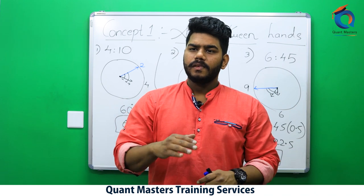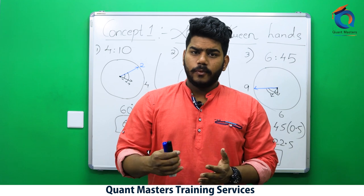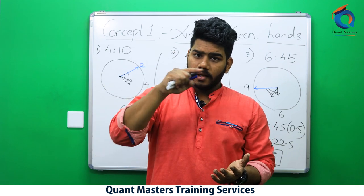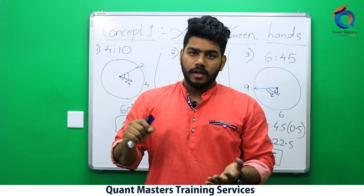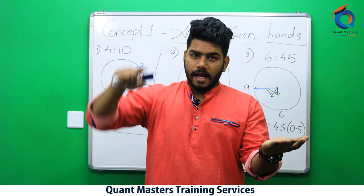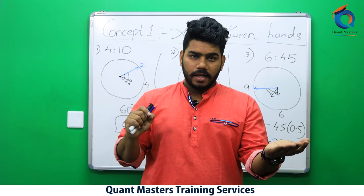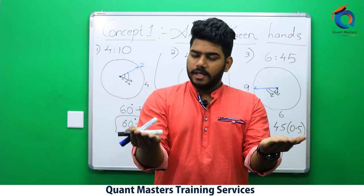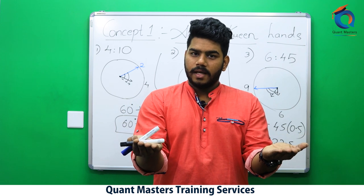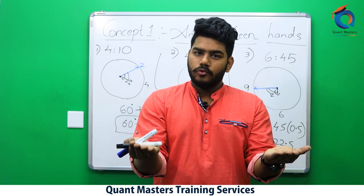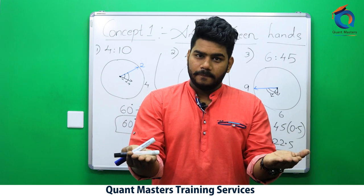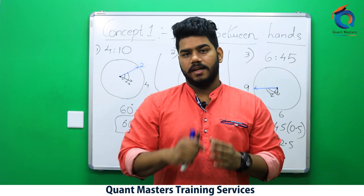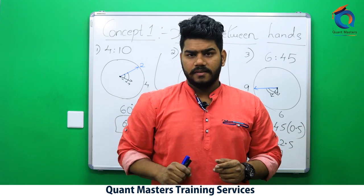Example: 8:20. Hour hand at 8, minute hand at 4. 8 minus 4 = 4 divisions = 120 degrees. Hour hand deflected by 20 minutes; half of 20 = 10 degrees. At 8:20 the hour hand moves away from the minute hand — plus. Answer: 120 + 10 = 130 degrees.